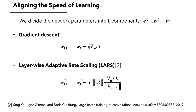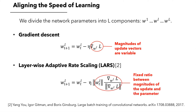We use layer-wise adaptive rate scaling LARS to align the pace of learning of sub-networks. Gradient descent updates the parameter with the magnitude of the gradient, while LARS scales the gradient updates for different layers so that the updates become proportional to the parameter width. This technique was originally designed for training under extremely large batch sizes. Here, we redirect the familiar technique for a novel purpose.